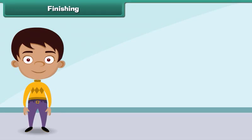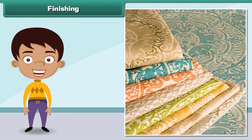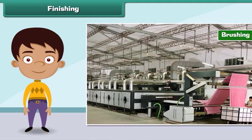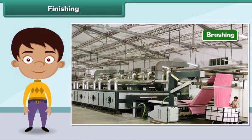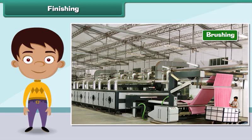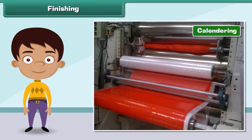The process that improves the appearance and usefulness of a fabric is known as finishing. Some important finishing treatments are: brushing, which removes short and loose fibers from a fabric; calendaring, which improves the smoothness and shine of a fabric; and bleaching, which removes the natural color of raw fabric.